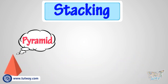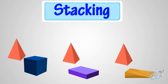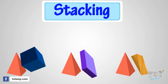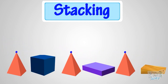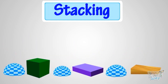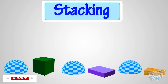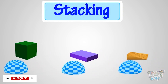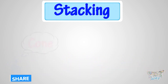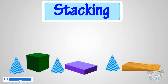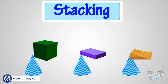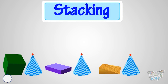A pyramid — we can stack it on top of anything, but cannot stack anything on a pyramid as it has a pointed top. A hemisphere — we can stack it on top of anything, but cannot stack anything on it as it has a curved top. A cone — we can stack it on top of anything, but we cannot stack anything on a cone as it has a pointed top.